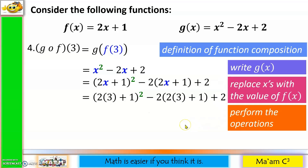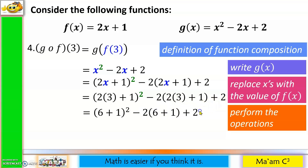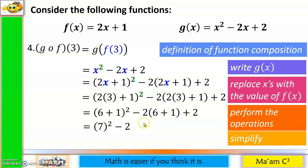Continuing the operations: 7 squared is 49, minus 2 times 7 is 14, plus 2. So 49 minus 14 is 35, and 35 plus 2 is 37. We have the same answer as before, confirming g∘f(3) = 37.